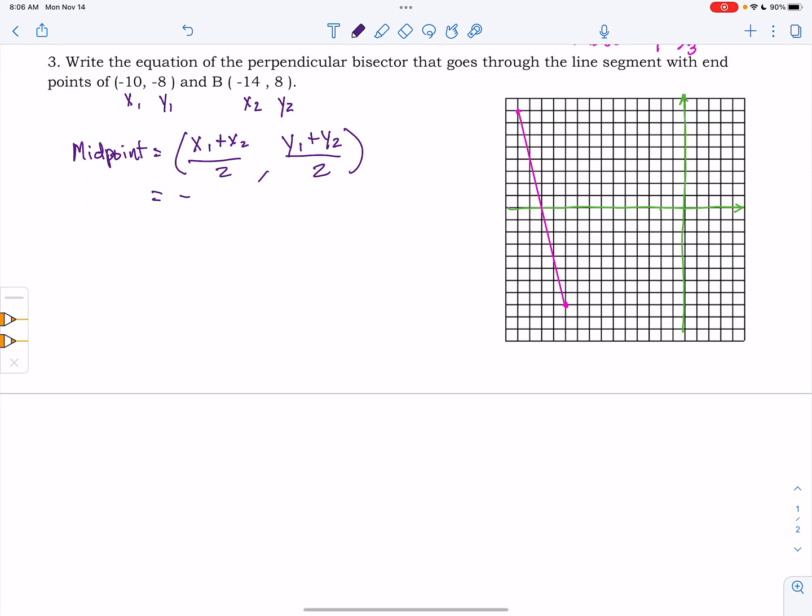And so when we plug that in, we get negative 10 plus negative 14 over 2, comma, negative 8 plus 8 over 2. And simplifying that, we get negative 24 over 2, comma, 0 over 2.